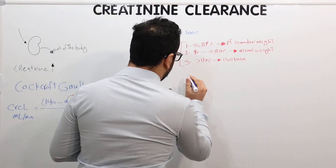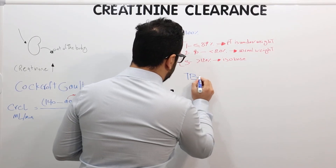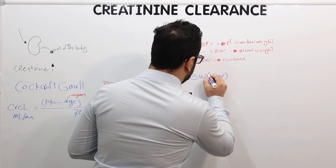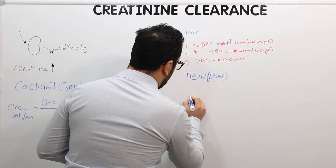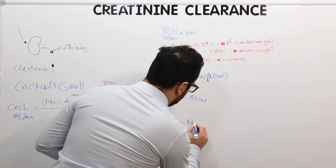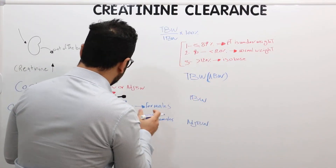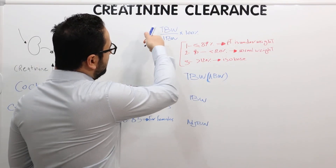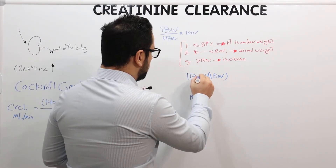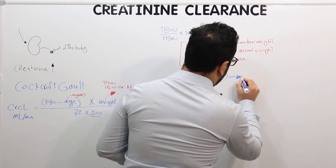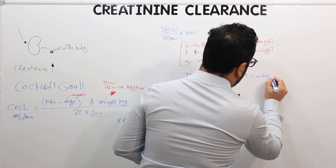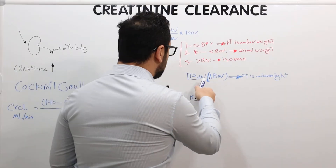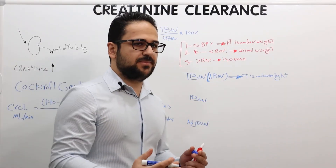So we have total body weight, also called actual body weight (ABW) — basically the same thing — then ideal body weight, and then adjusted body weight. For total body weight: whenever the patient is underweight, total body weight is less than ideal body weight, so we will always use total body weight. Whenever a patient is underweight — less than or equal to 89% — we will always use their actual body weight, which is basically what is taken on the scale when they come in.